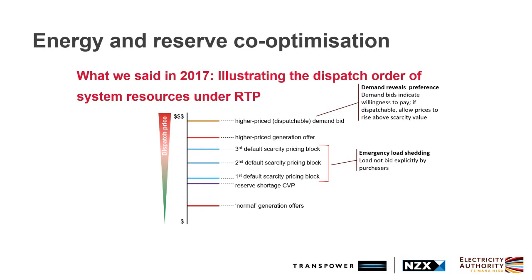Those of you who've been keeping an eye on the project will recognize this diagram from 2017 where we talked at a high level about the priorities we're trying to maintain. At the bottom, normal generation offers sit below in the price stack before we hit into reserve shortages, then into the default energy scarcity pricing blocks. This is for load currently forecast by the system operator's load forecast, or any dispatchable demand bids, which will remain as pricing blocks in their own right. There's also the potential for higher-price generation offers and higher-price dispatchable demand bids to further set the price to indicate willingness to pay for resources.